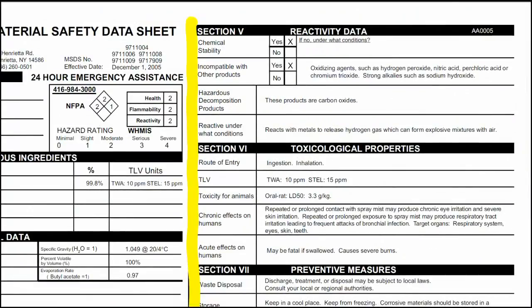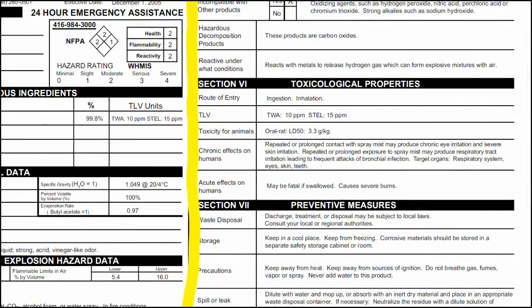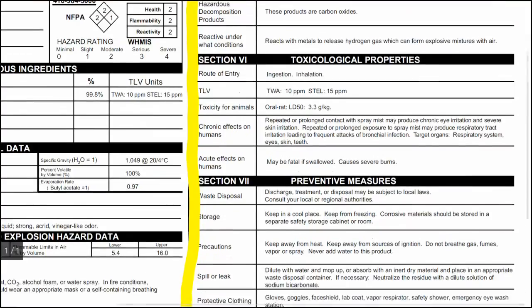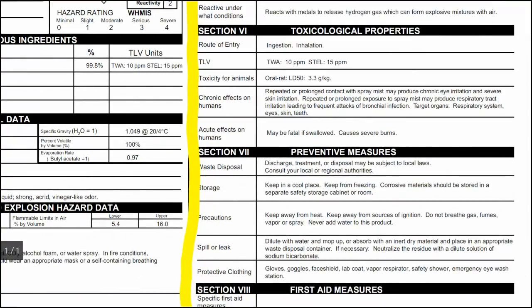Next, we have the reactivity data. This helps us determine how to store the product and when to exercise additional caution if using it with other products, whether or not those fall under WHMIS. Then there are the toxicological properties of the material, including how the substance can enter the body and what the effects — both immediate and long-term — are when exposed to the product.